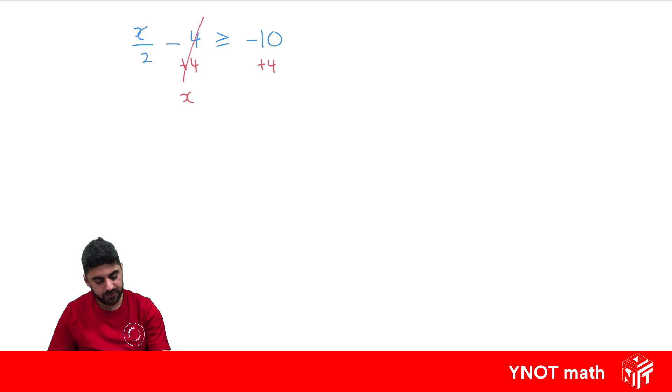That's going to go, it's going to be 0. So we're left with x over 2 on that side. It's greater than or equal to minus 10 plus 4 is minus 6.